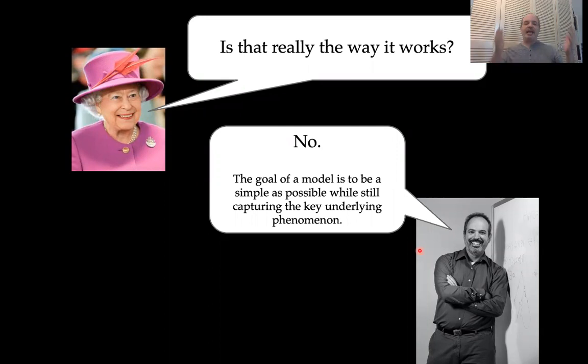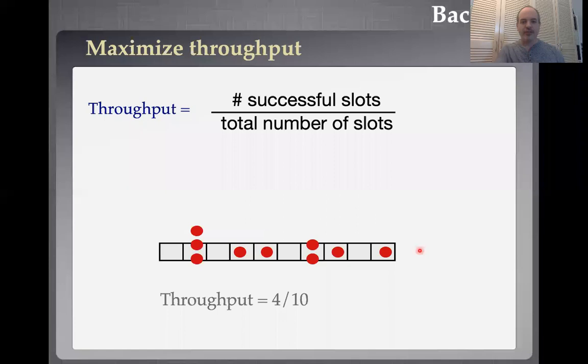At this point you might complain — that's not how wireless networks really work. And you would be absolutely correct. This is a simplified model of the real world. But I would argue that the goal of a model is to be as simple as possible while still capturing the key underlying phenomenon. We need a model that captures this problem of contention because we want to solve contention resolution. We're going to ignore many other important issues that are not relevant for the contention resolution problem. This is a highly stylized model.